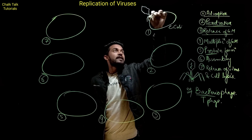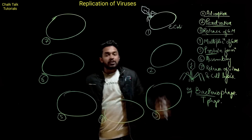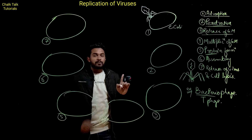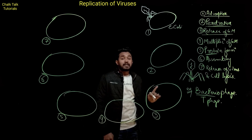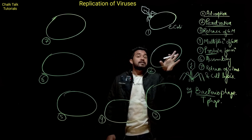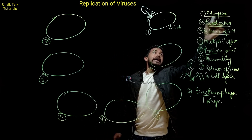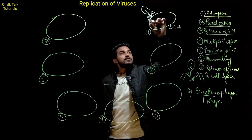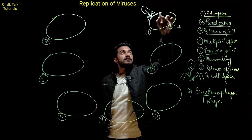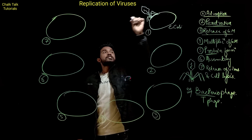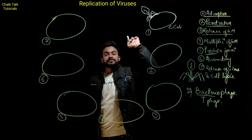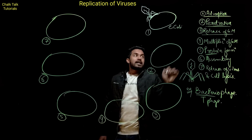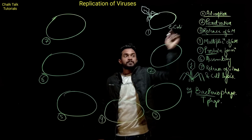The first step of the virus life cycle is adsorption. Adsorption means that the virus attaches to the cell wall surface of the bacterium. This is the adsorption step.